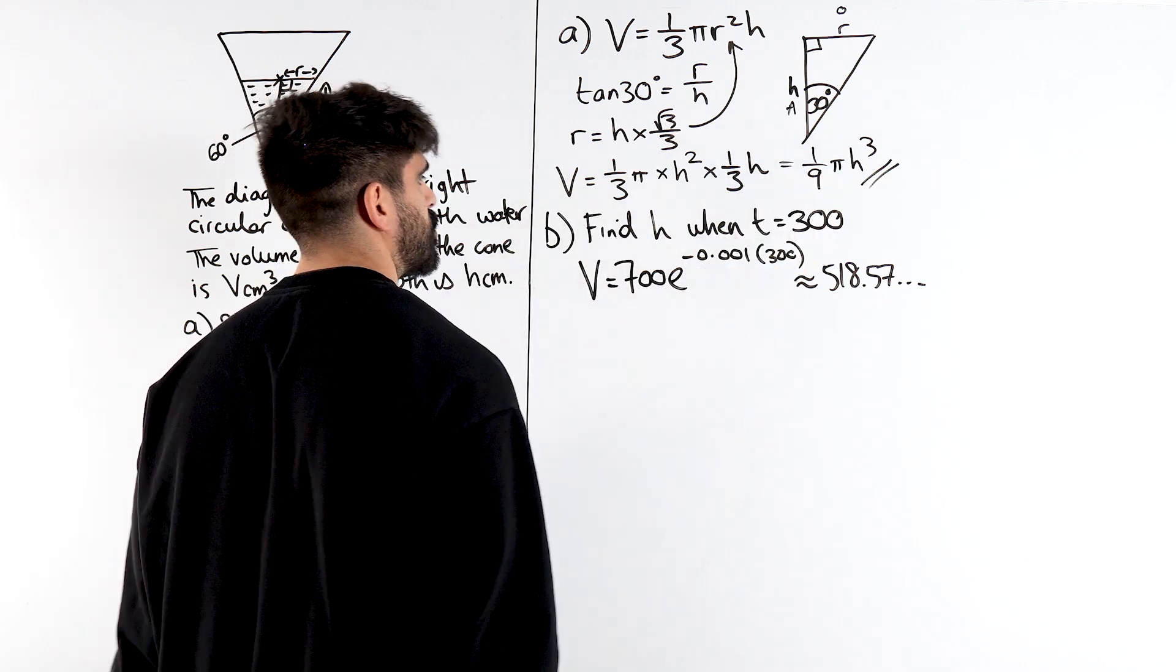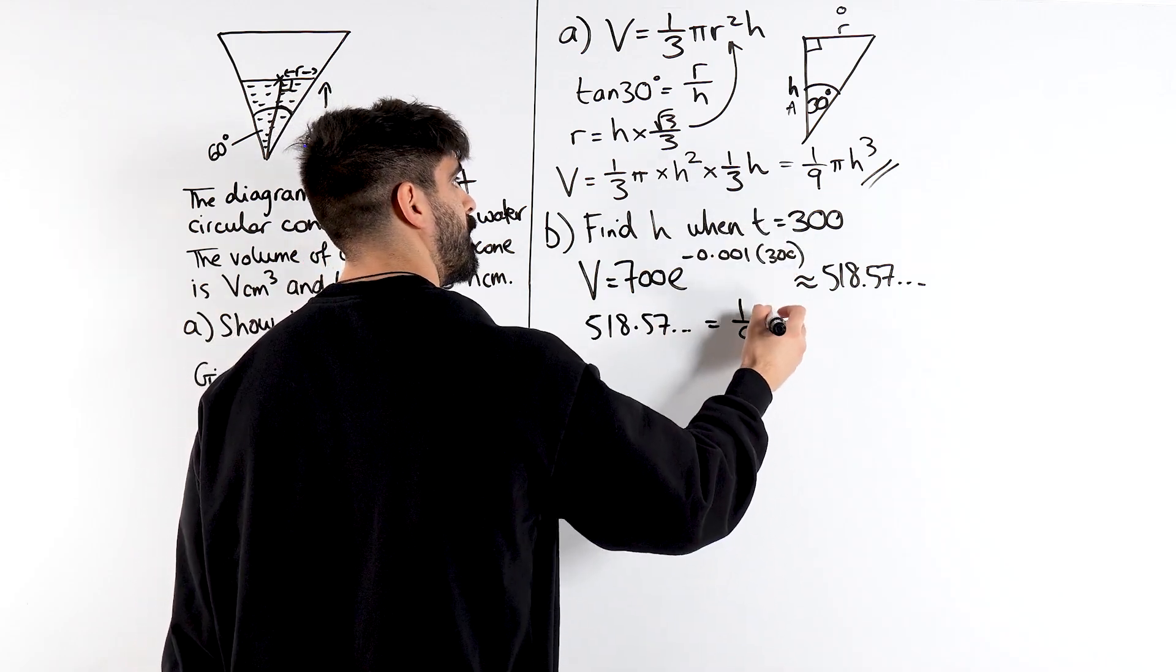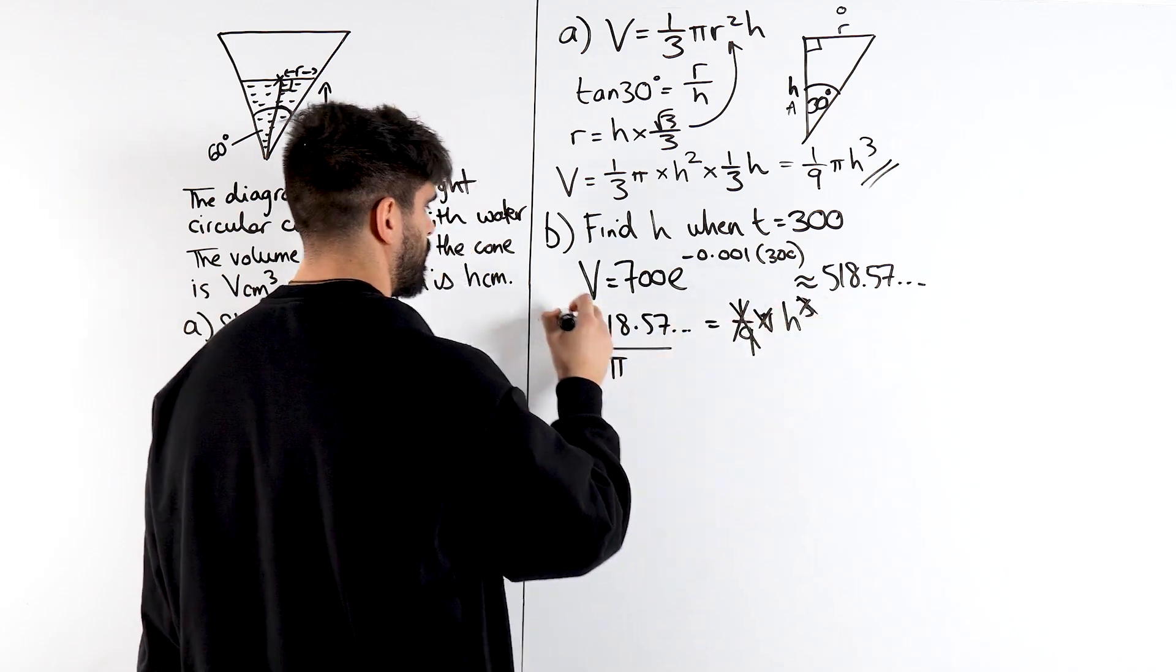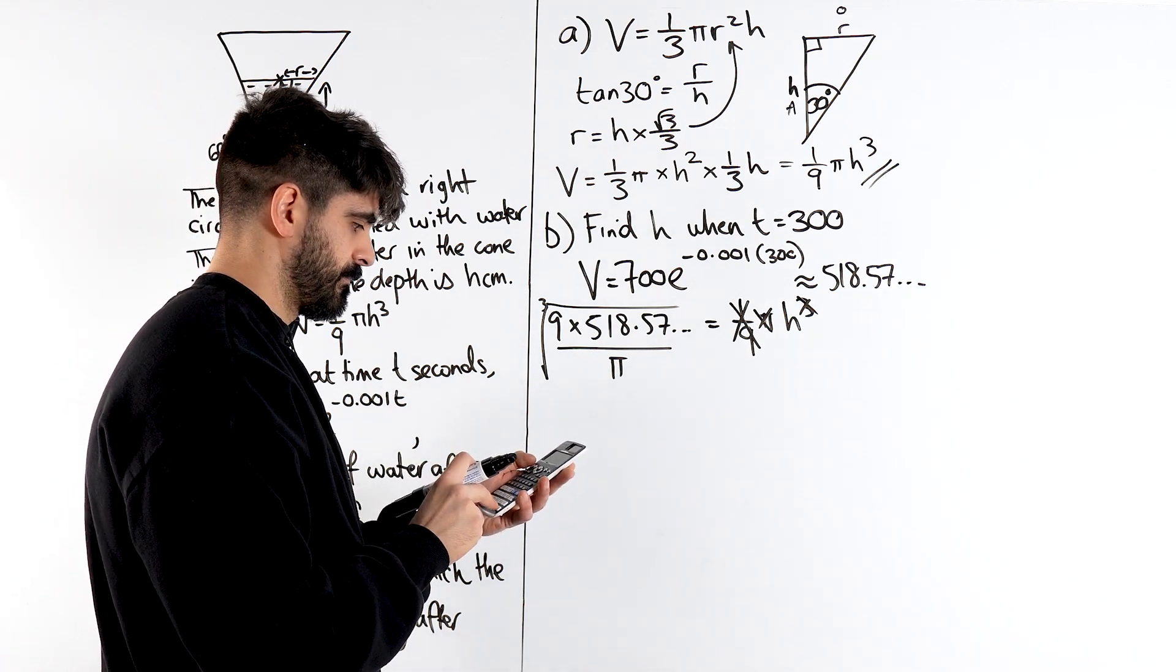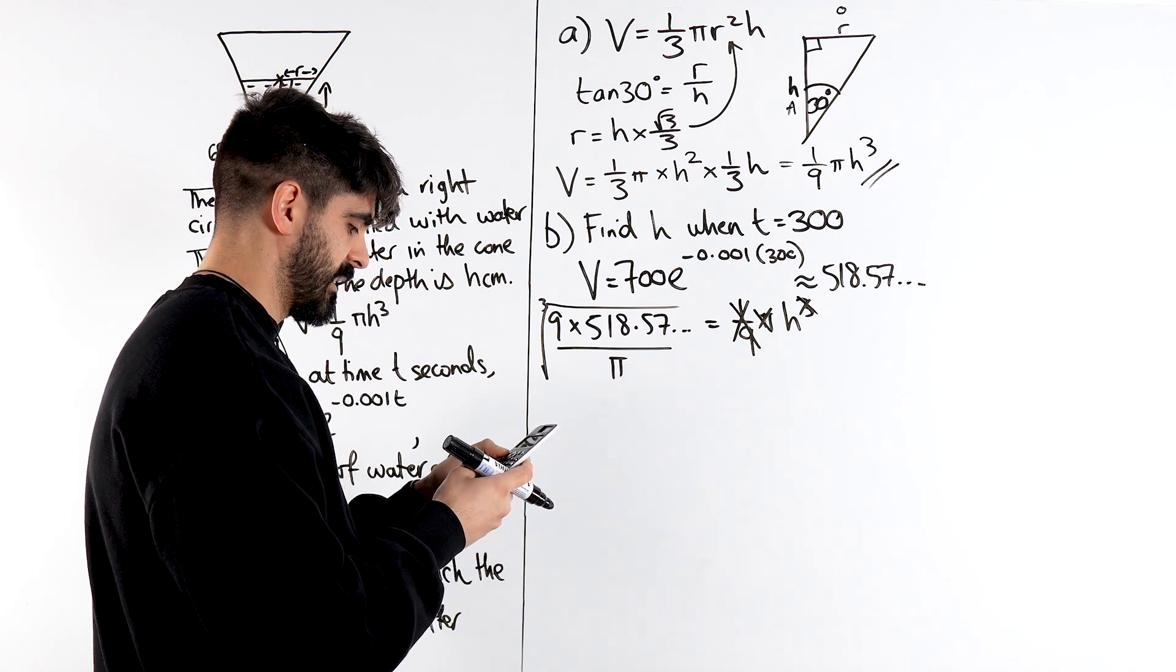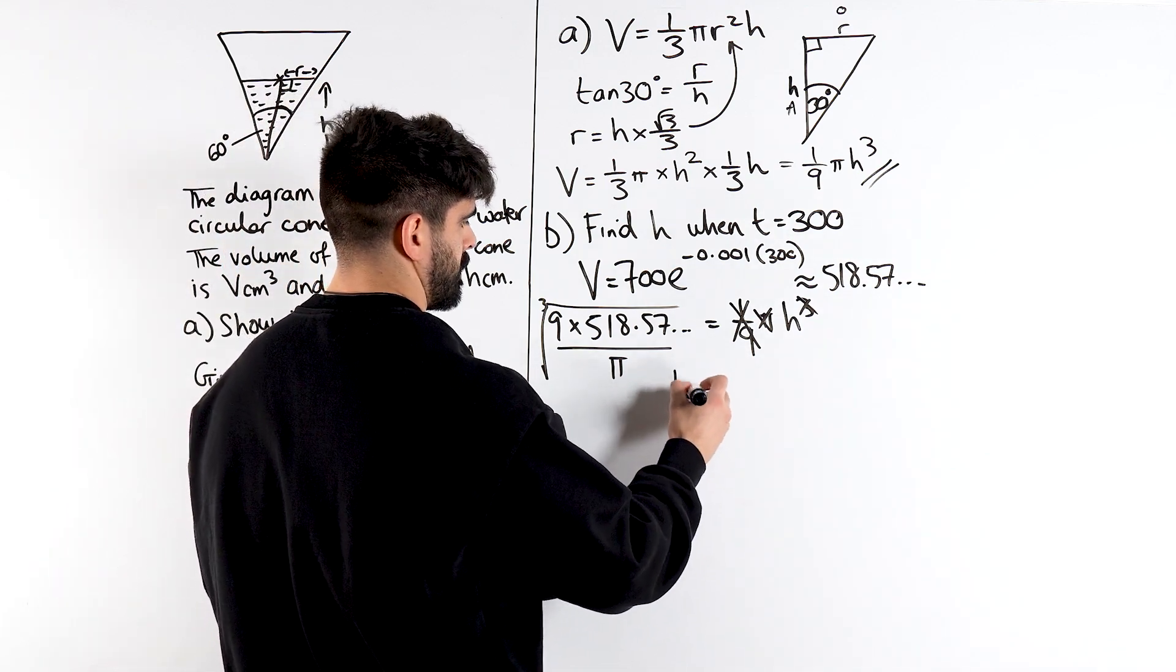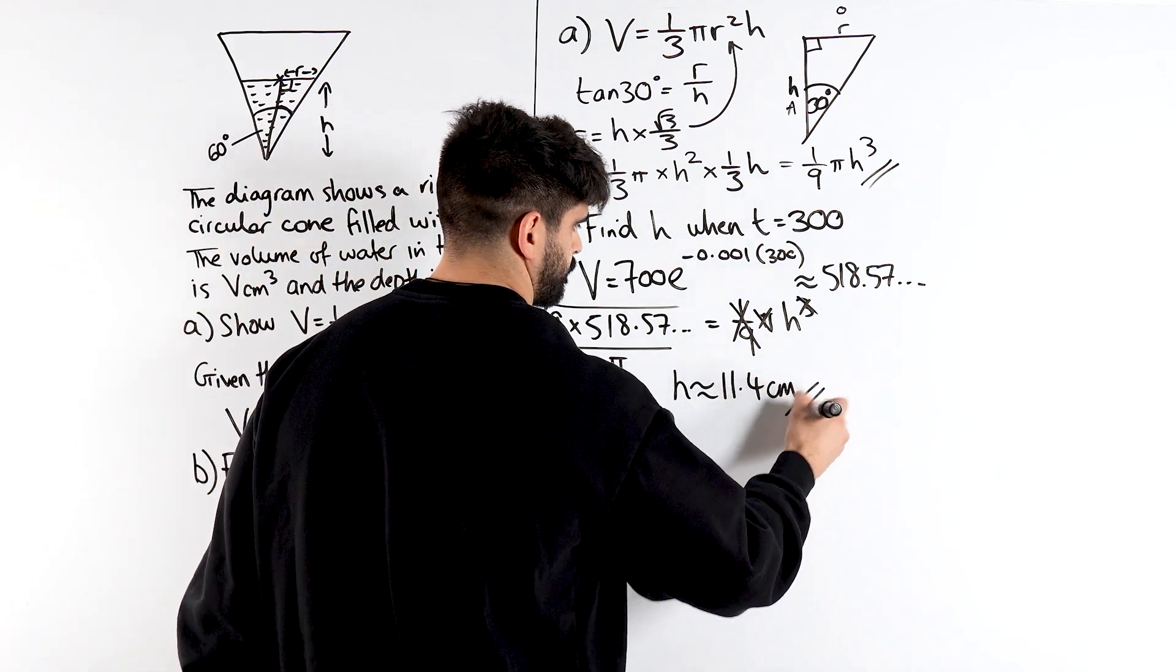Well, we have a relationship between the volume and h. So, we're just going to sub that in. So, we have that 518.57 is 1 ninth pi h cubed. So the first thing I'm going to do is I'm going to times through by 9. Then I'm going to divide through by pi. And then I'm going to cube root the answer. I'm doing cube root of 9 times a all over pi. 11.4. So, I get h is approximately 11.4 centimeters.